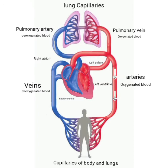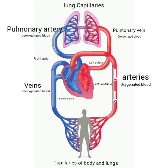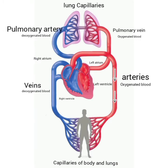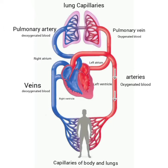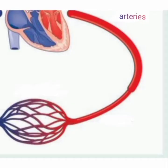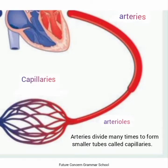Most of the arteries carry oxygenated blood, but pulmonary arteries carry deoxygenated blood to the lungs. زیادہ تر arteries oxygenated blood لے کر جاتی ہیں — یعنی وہ خون جس میں oxygen کی مقدار زیادہ ہوتی ہے۔ لیکن pulmonary arteries جو کہ پھیپڑوں کی طرف جاتی ہیں، deoxygenated blood لے کر جاتی ہیں تاکہ پھیپڑوں میں اس خون میں oxygen شامل کی جا سکے۔